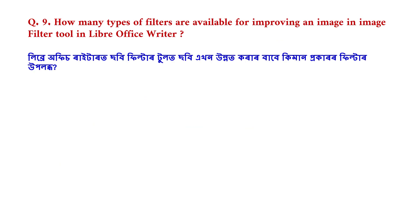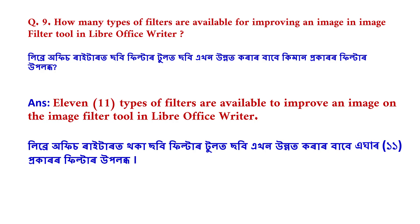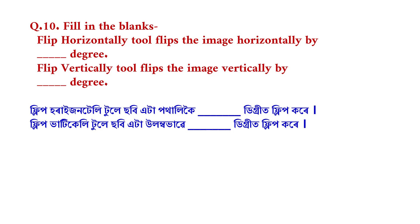The next question is: how many types of filters are available for improving an image in the image filter tool in LibreOffice Writer? The answer is: 11 types of filters are available to improve an image in the image filter tool in LibreOffice Writer. Fill in the blanks: the flip horizontally tool flips the image horizontally by 180 degrees; the flip vertically tool flips the image vertically by 180 degrees.